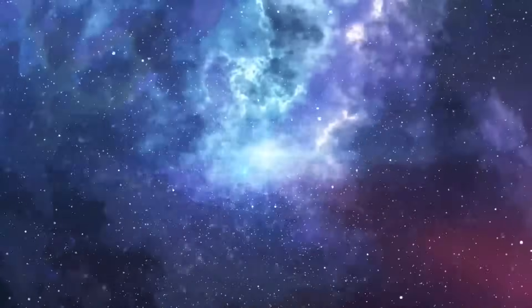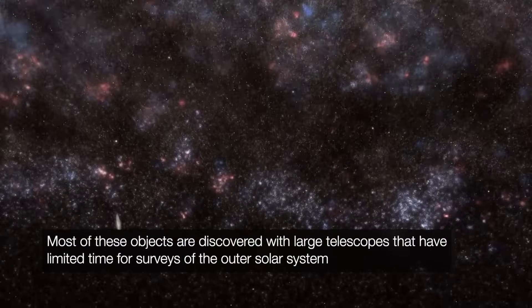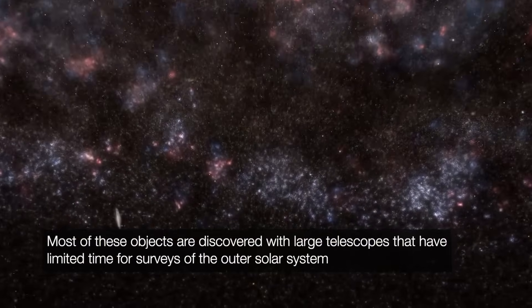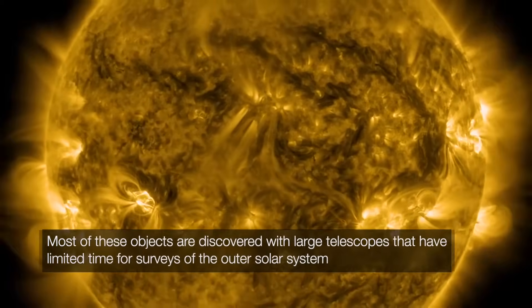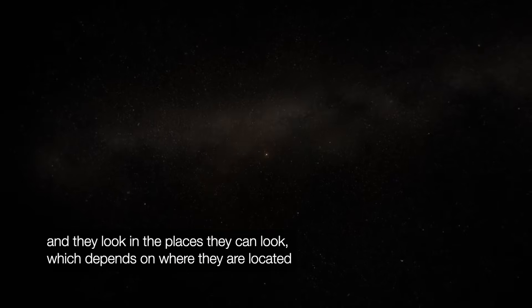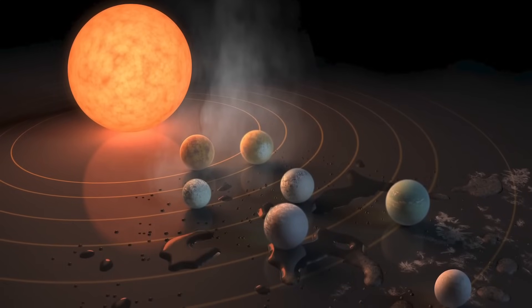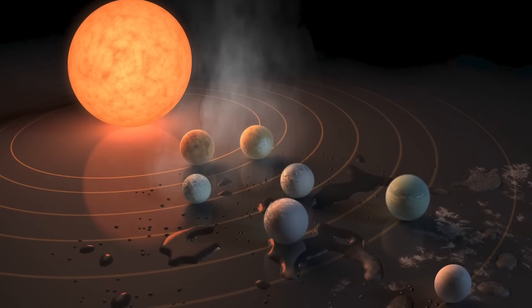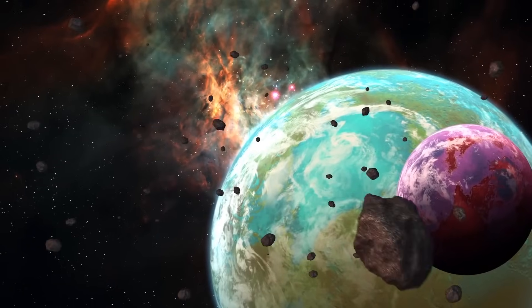Most of these objects are discovered with large telescopes that have limited time for surveys of the outer solar system, and they look in the places they can look, which depends on where they are located, says Renu Malhotra of the University of Arizona, who is agnostic about the planet's existence and is working on her own estimates of its position.